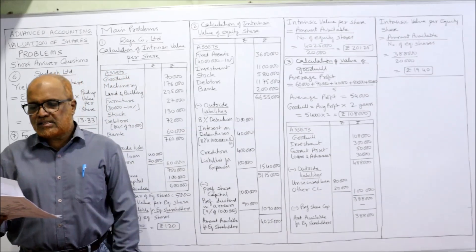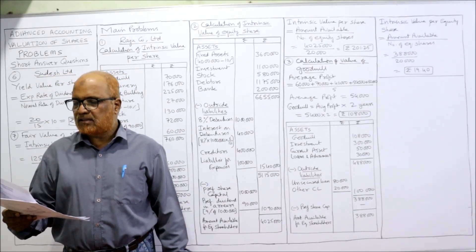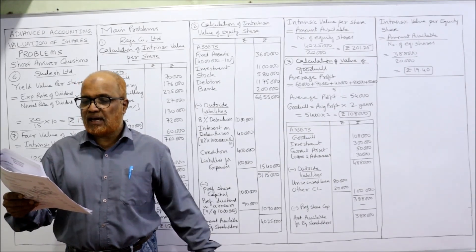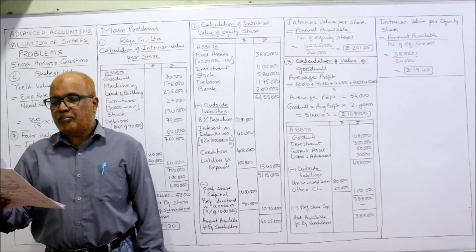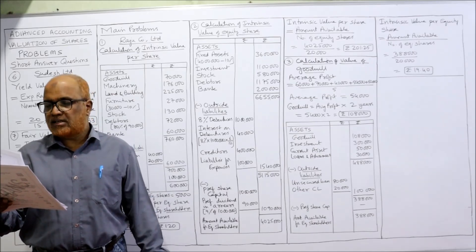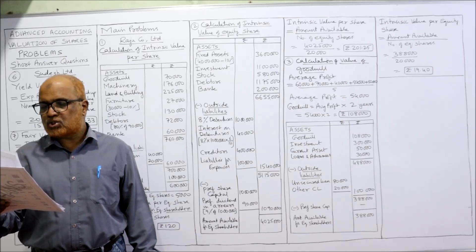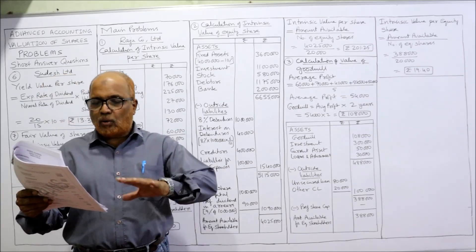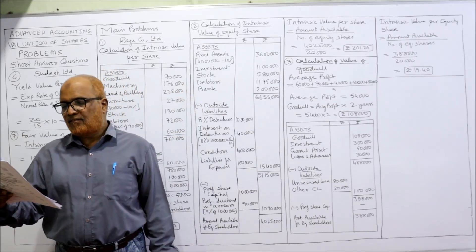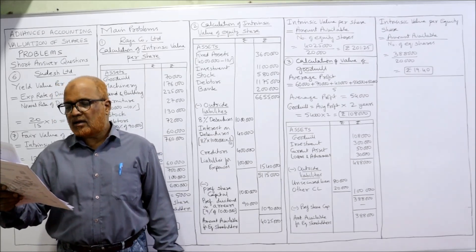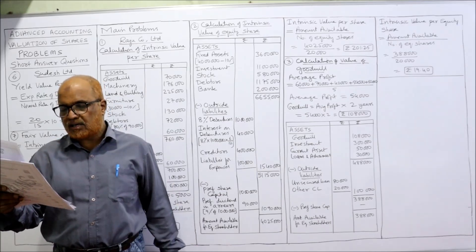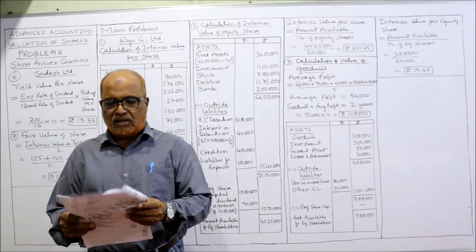Second problem: the following is the summarized balance sheet of Shiva Kumar Limited at 31st December. Shareholders' fund — share capital ₹30 lakh, reserves and surplus ₹25 lakh. Long term borrowings (outside liability) ₹10 lakh. Trade payable — again an outside liability. Other current liabilities — outstanding expenses ₹1 lakh. So outside liabilities are long term borrowing, trade payable, and other current liabilities. Assets side — fixed assets tangible ₹40 lakh, non-current investments ₹10 lakh, then current assets: inventories, trade receivable, cash and cash equivalent. Total balance sheet ₹70 lakh.